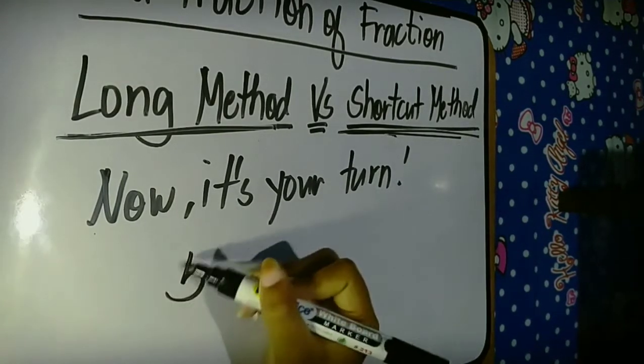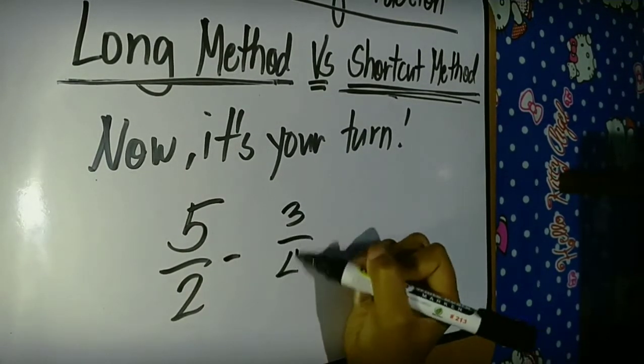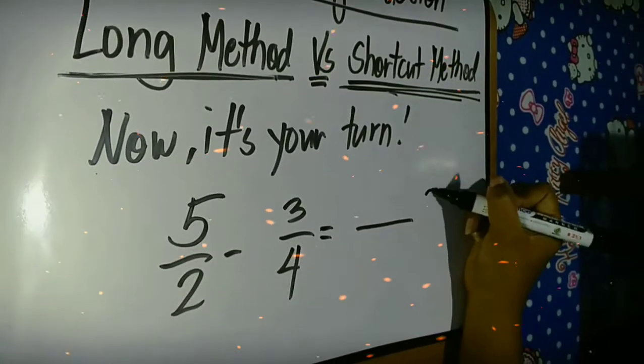You can use long method or the shortcut method. The given is 5 halves minus 3 fourths. What would be the answer?